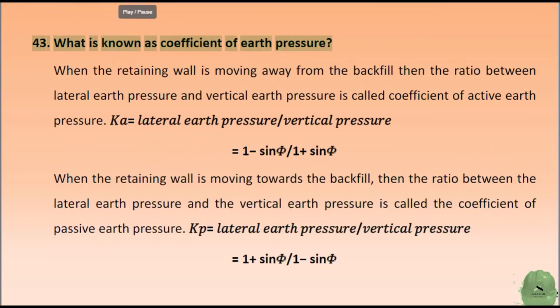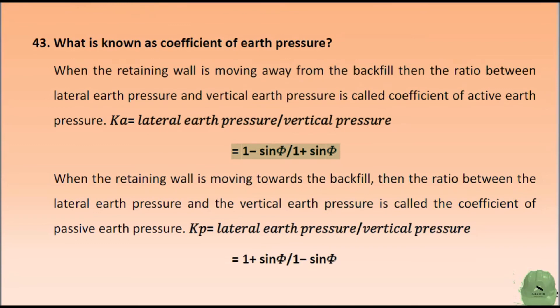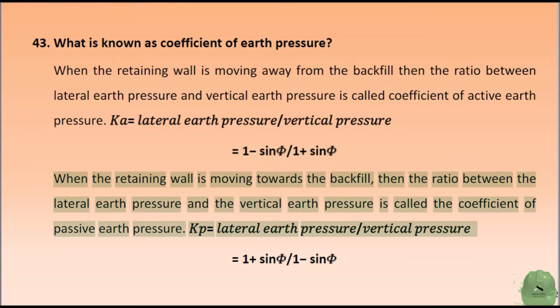What is known as coefficient of earth pressure? When the retaining wall is moving away from the backfill, the ratio between lateral earth pressure and vertical earth pressure is called the coefficient of active earth pressure. When the retaining wall is moving towards the backfill, the ratio between the lateral earth pressure and the vertical earth pressure is called the coefficient of passive earth pressure.